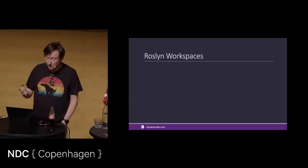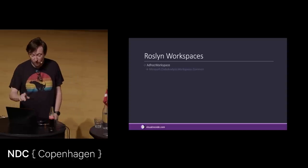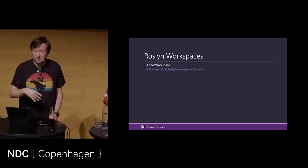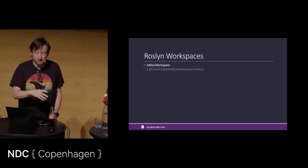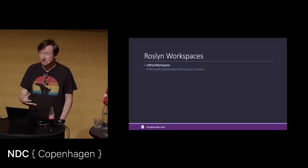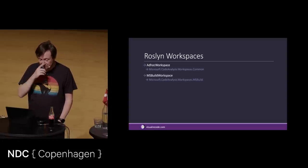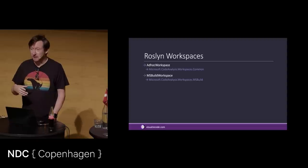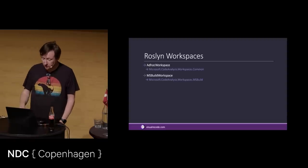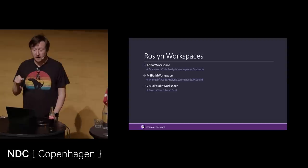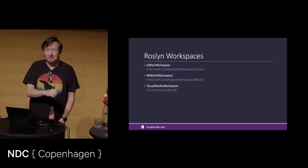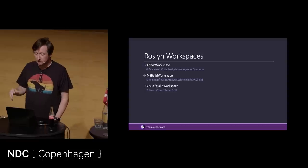So — workspaces. This is the top-level thing. We have an ad hoc workspace where you can create a solution in memory, create projects, add them to the solution — it's really good for unit tests and mucking about and just trying ideas out. And then you have the MSBuild workspace, which is the useful one. You can actually call Build on it and it will generate DLLs. And then specifically when you're creating Visual Studio extensions, you have Visual Studio workspace, which has got extra stuff that lets you interact with Visual Studio itself.